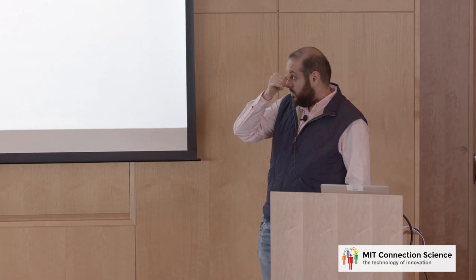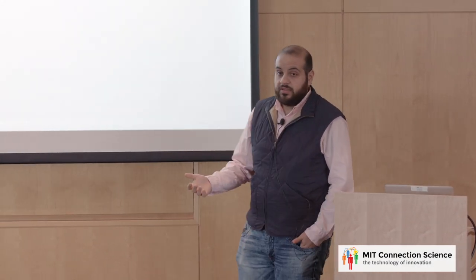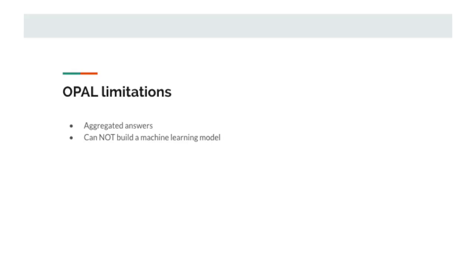But as you saw in that demo, there's limitations in OPAL, the current architecture, which basically it only gives you aggregate answers. It's useful, like if you want to compute the average or a summation over columns, it's good. It gives you just the number.